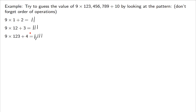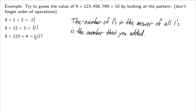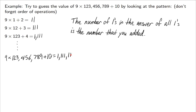Let's write that down: the number of ones in the answer is the number that you added. So for the large problem, we would expect there to be 10 ones in the answer — that's 1 billion, 111 million, 111 thousand, 111 as our answer.